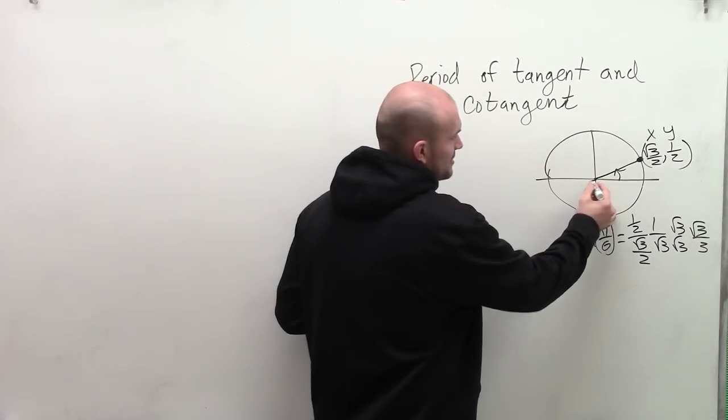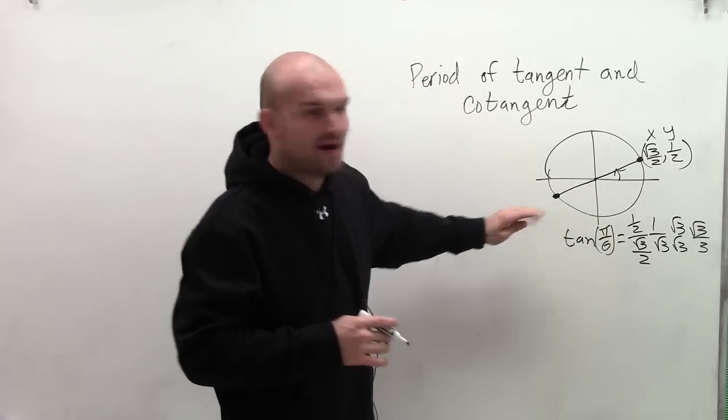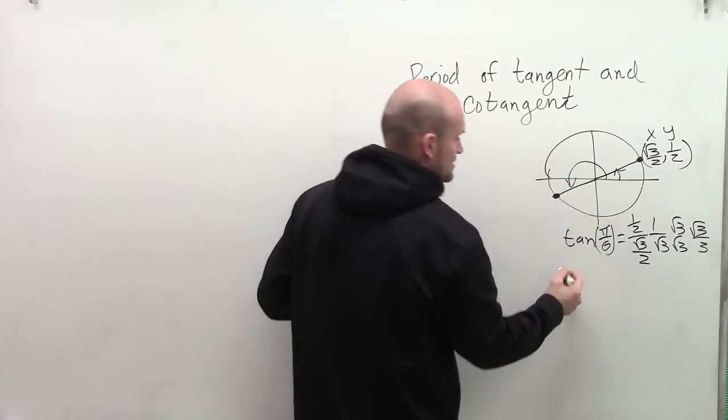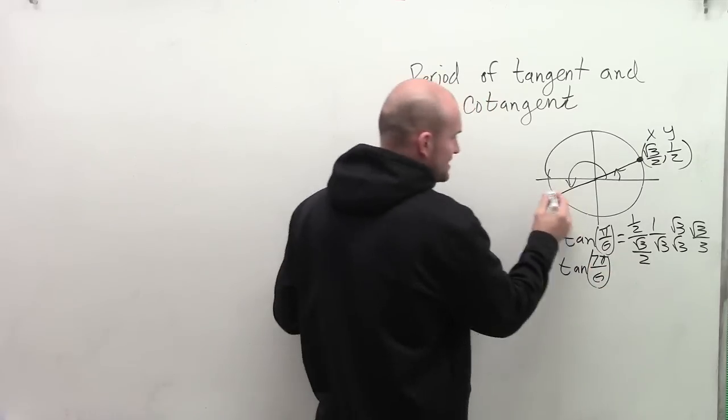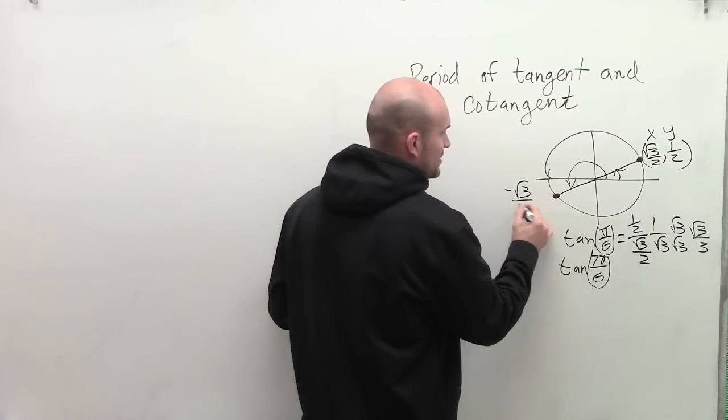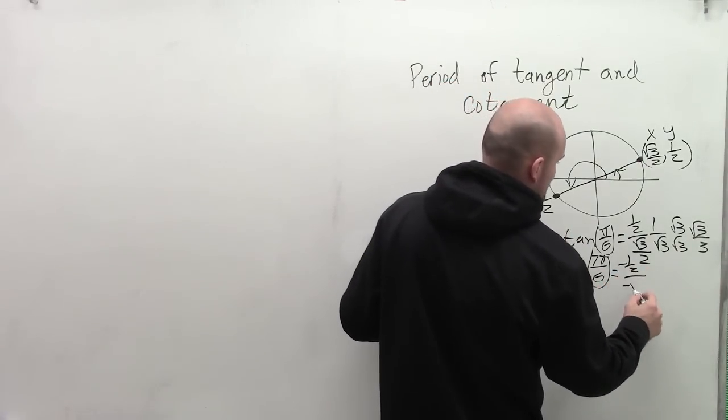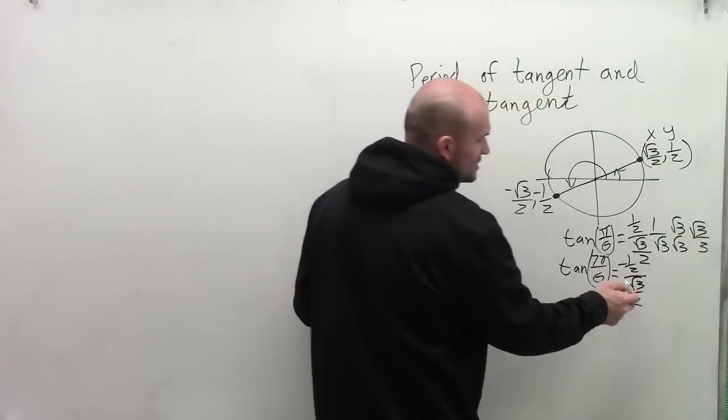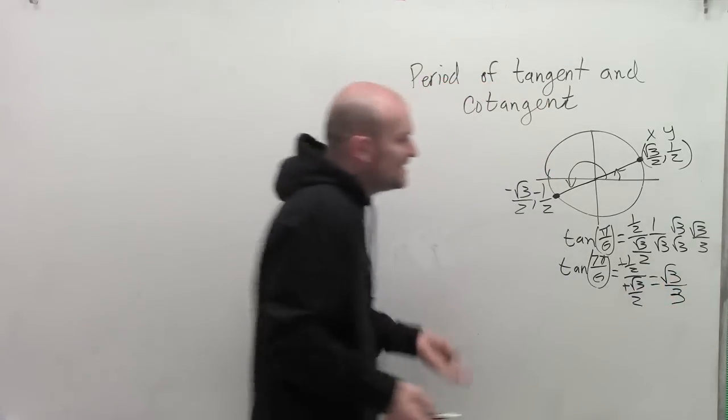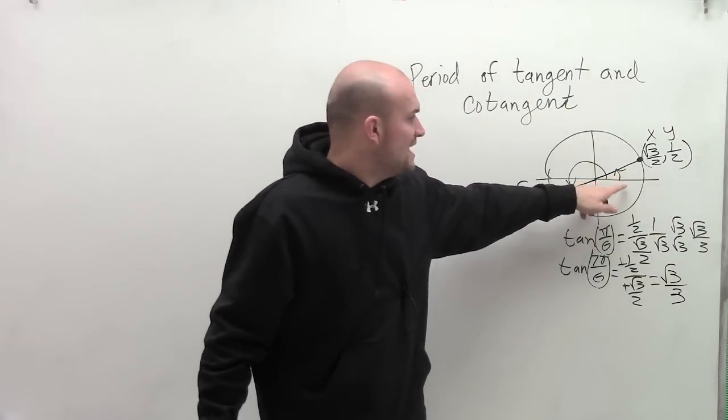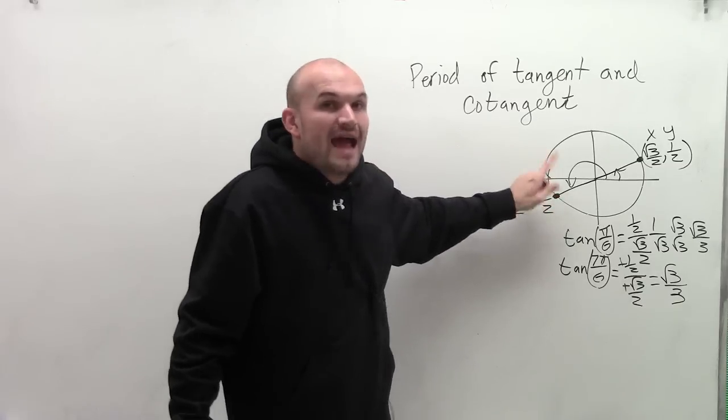And what I want you to notice is if we look at 7 pi over 6, tangent of 7 pi over 6, what we get now is this point is negative square root of 3 over 2 comma negative 1 half. Well, therefore, when you write this out, negative square root of 3 over 2 over negative 1 half, you notice that the negative signs are going to cancel out. Therefore, when simplifying this, we're going to get the exact same answer. So therefore, instead of going all the way around the circle to repeat itself, the tangent function now repeats itself after pi.